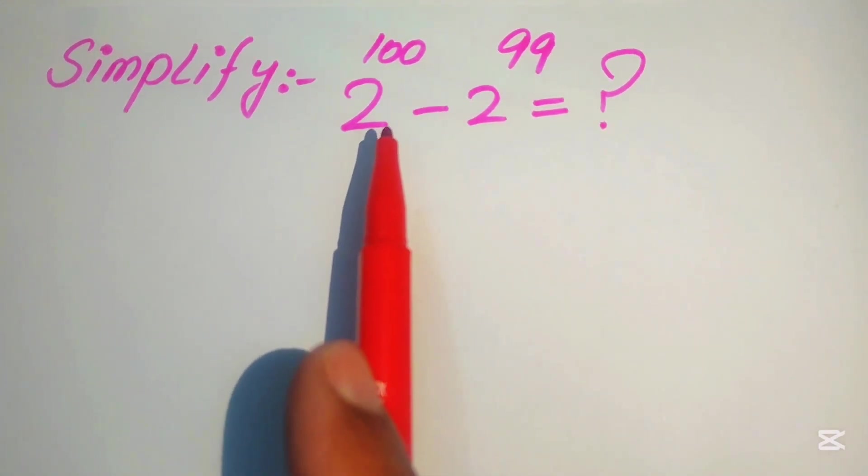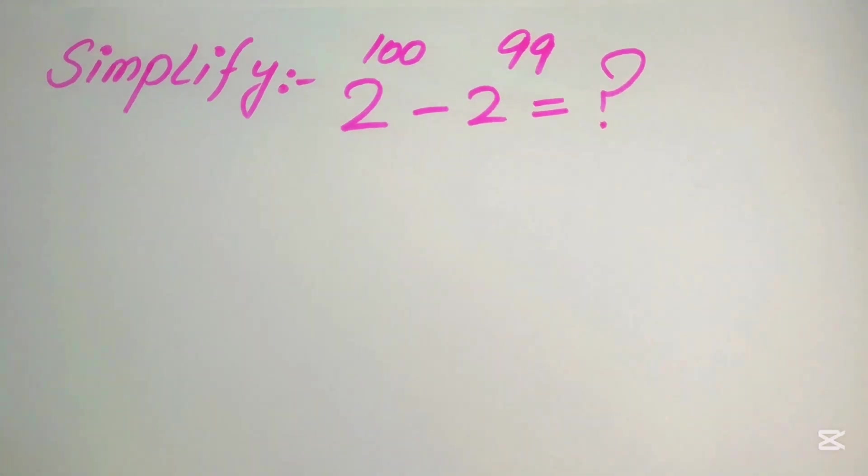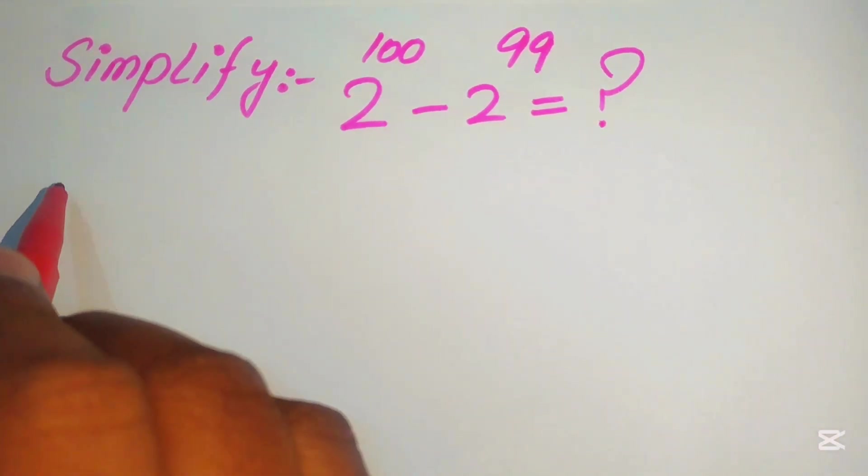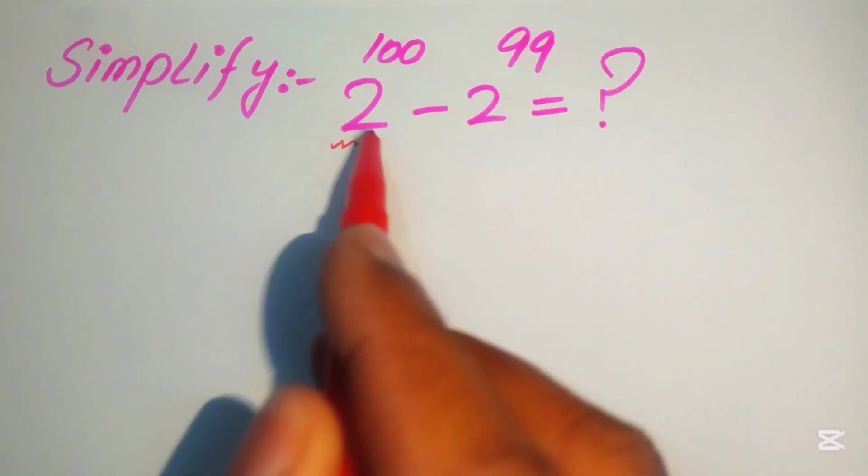So it means that we cannot have any rule in which the different exponents have subtraction of this type of number. So now we first apply the rule in the first term.